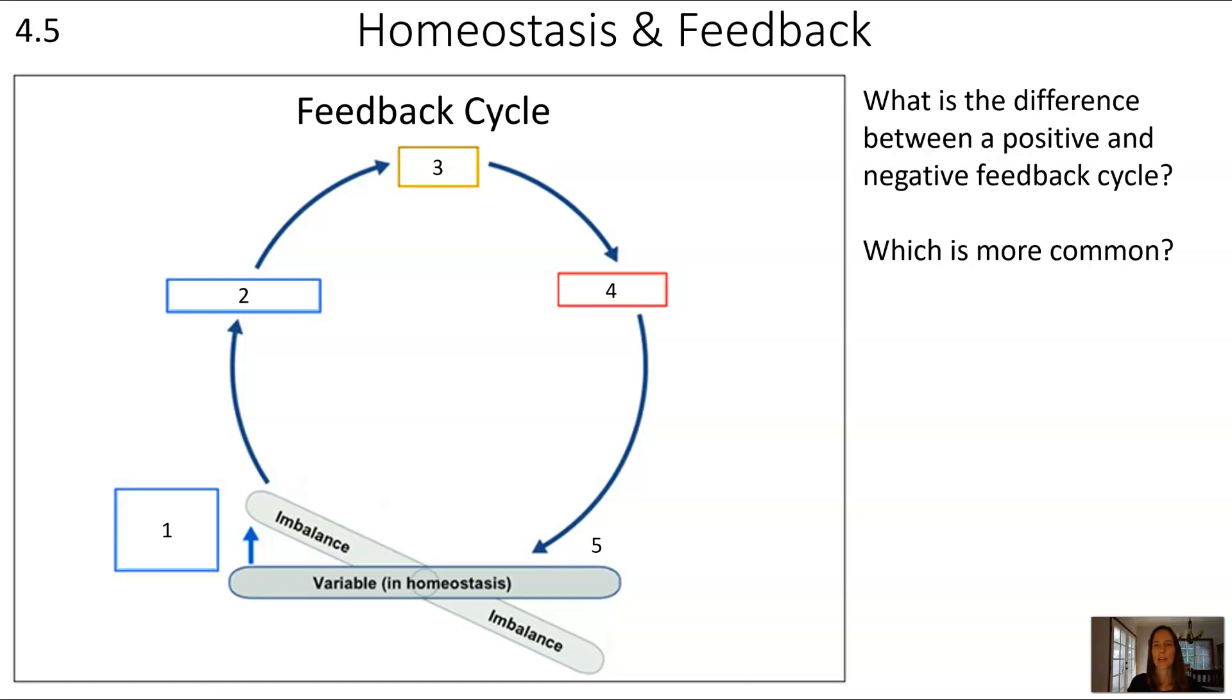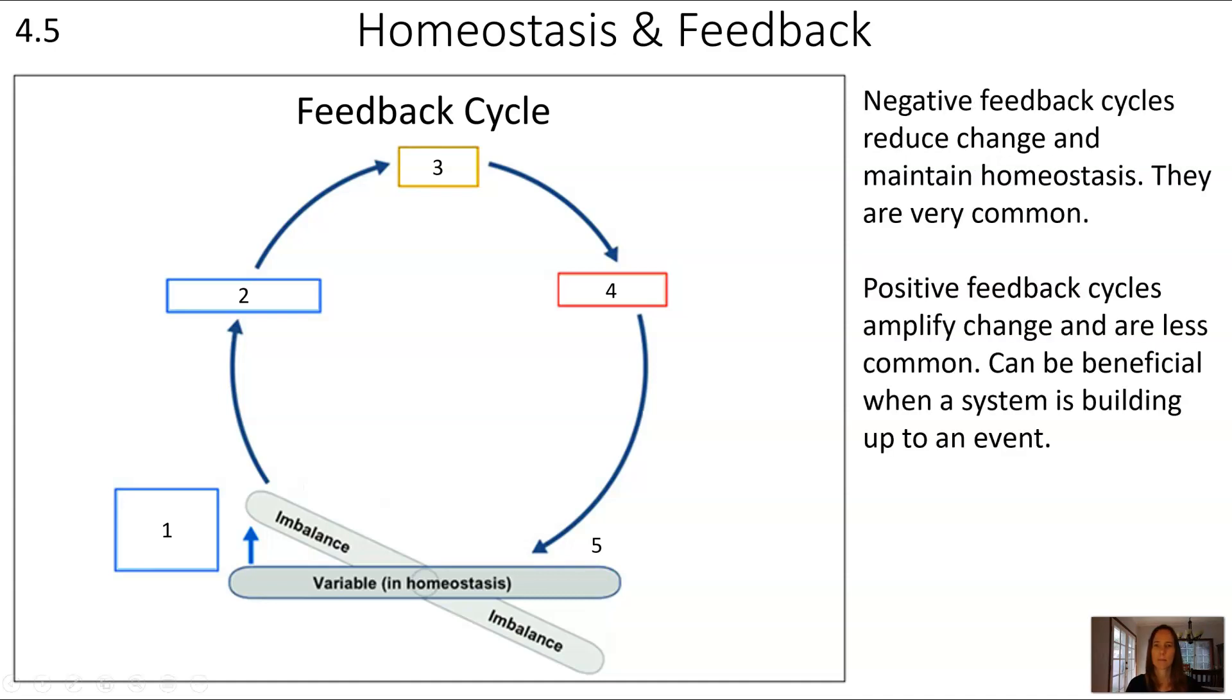Next questions related to this diagram are, what's the difference between a positive and negative feedback cycle? And also, which of those is more common? Negative feedback cycles reduce change and maintain homeostasis. These are really common because it keeps things in balance. For example, if in step one we had an increase of something in a negative feedback cycle, this would result in step five with a decrease of that same stimulus or of that same variable. Whereas positive feedback cycles amplify the change. These are less common. They can be beneficial when a system is building up to a big event, but they're less common.